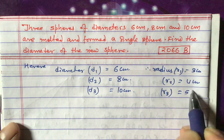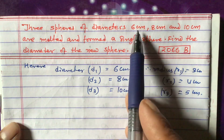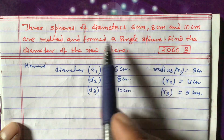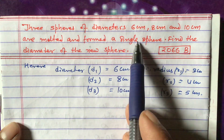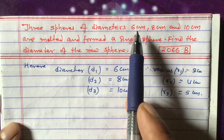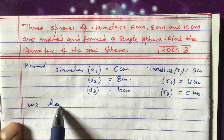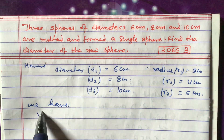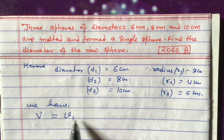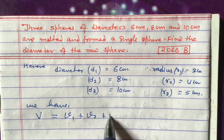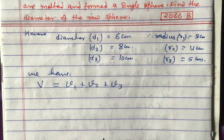Whenever you melt these three spheres and reform them into a single sphere, the volume of this single sphere will be equal to the sum of the volumes of the three spheres. So we can write: V, the volume of the biggest sphere, equals V1 plus V2 plus V3.